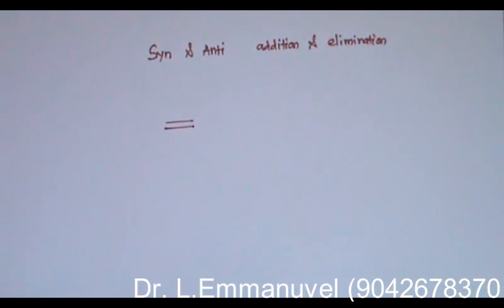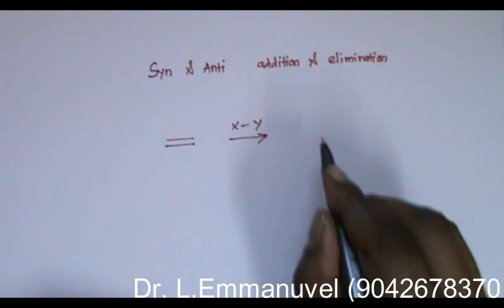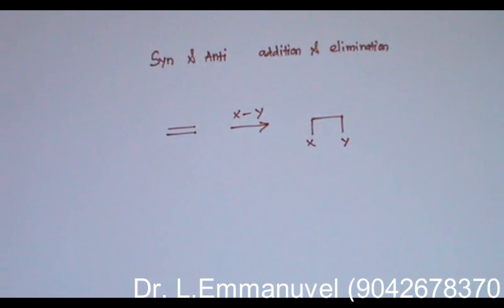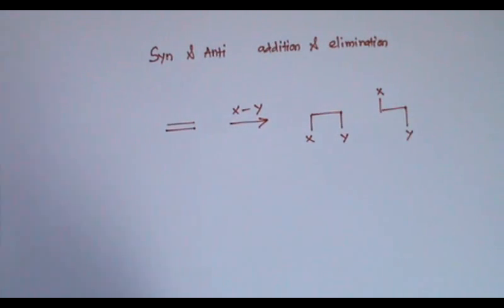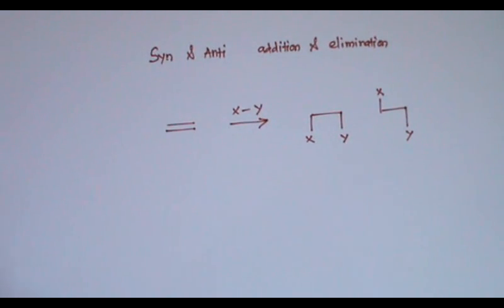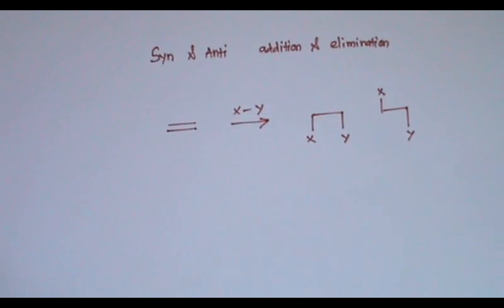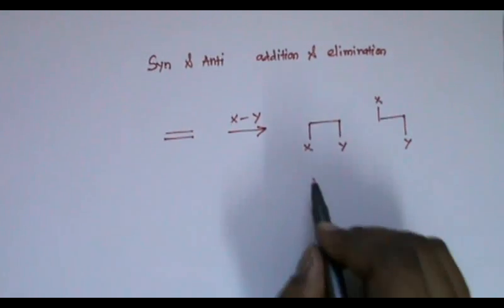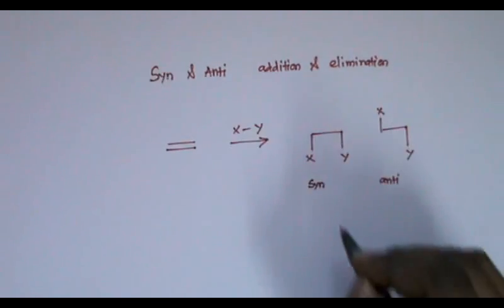Consider a double bond when I add X and Y. The X and Y can be added in the same direction or in the opposite direction. When it is symmetrical with all hydrogens, the product will be almost the same. When there is substitution, you can feel the difference. This is called syn addition vs. anti addition.